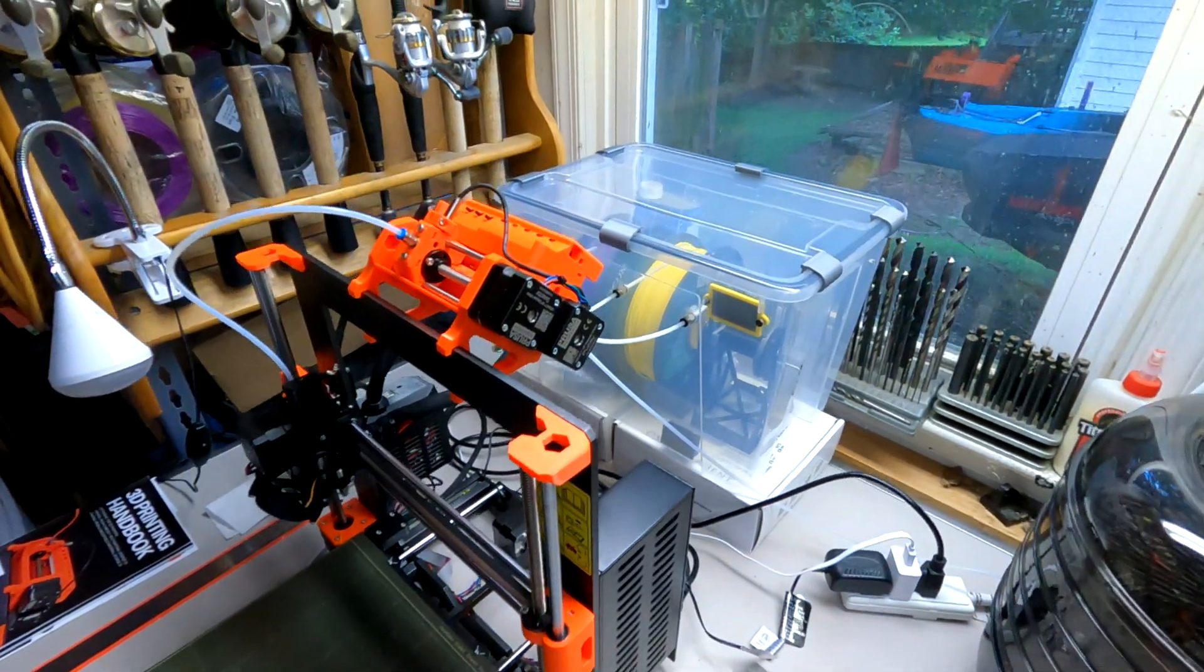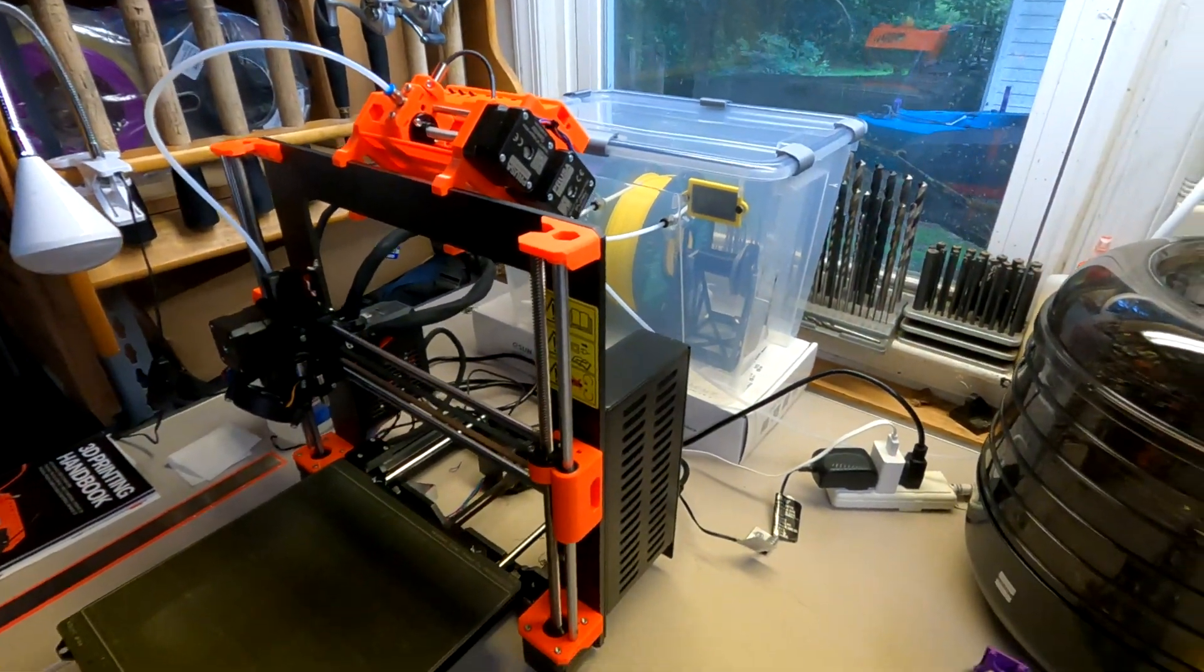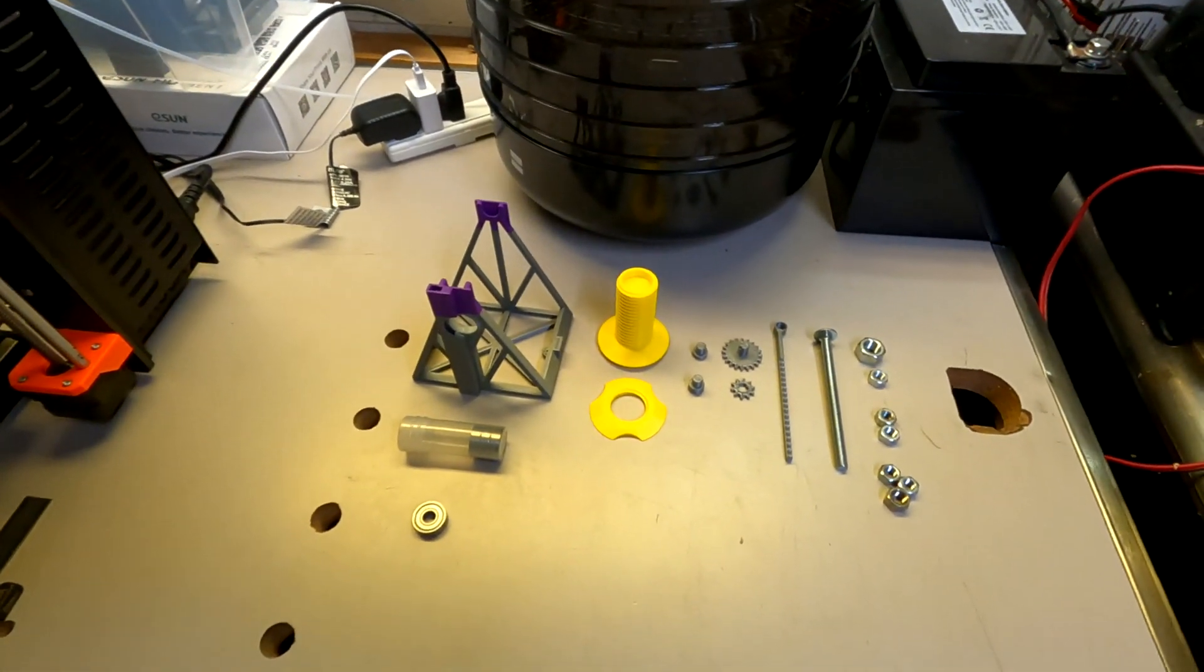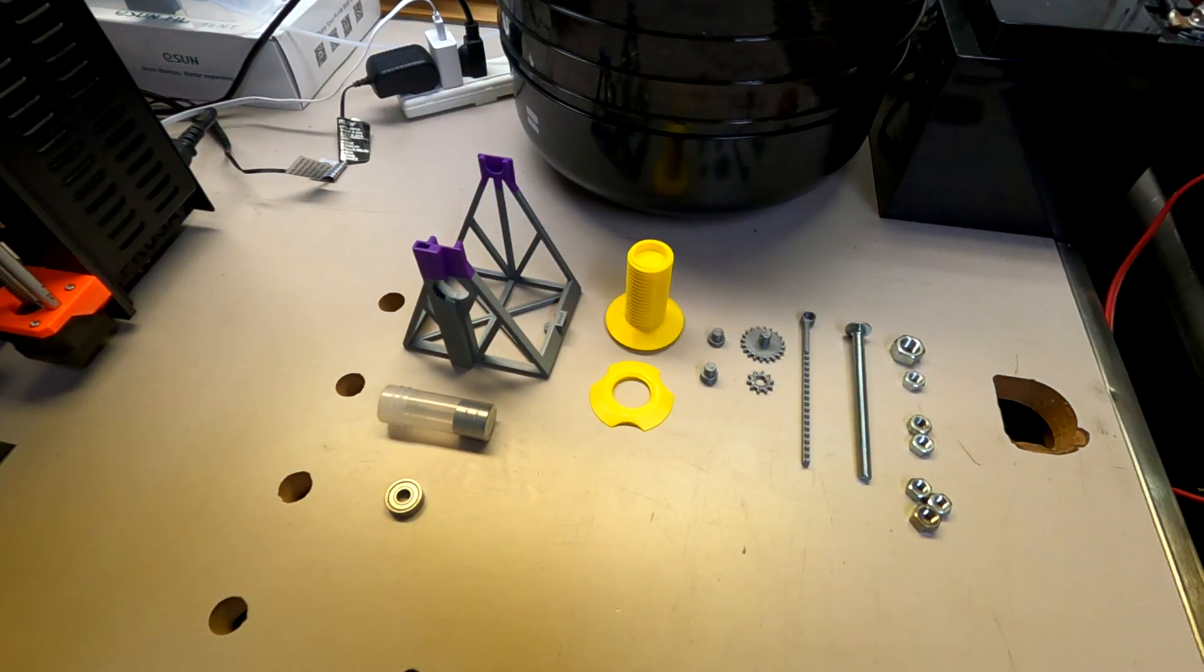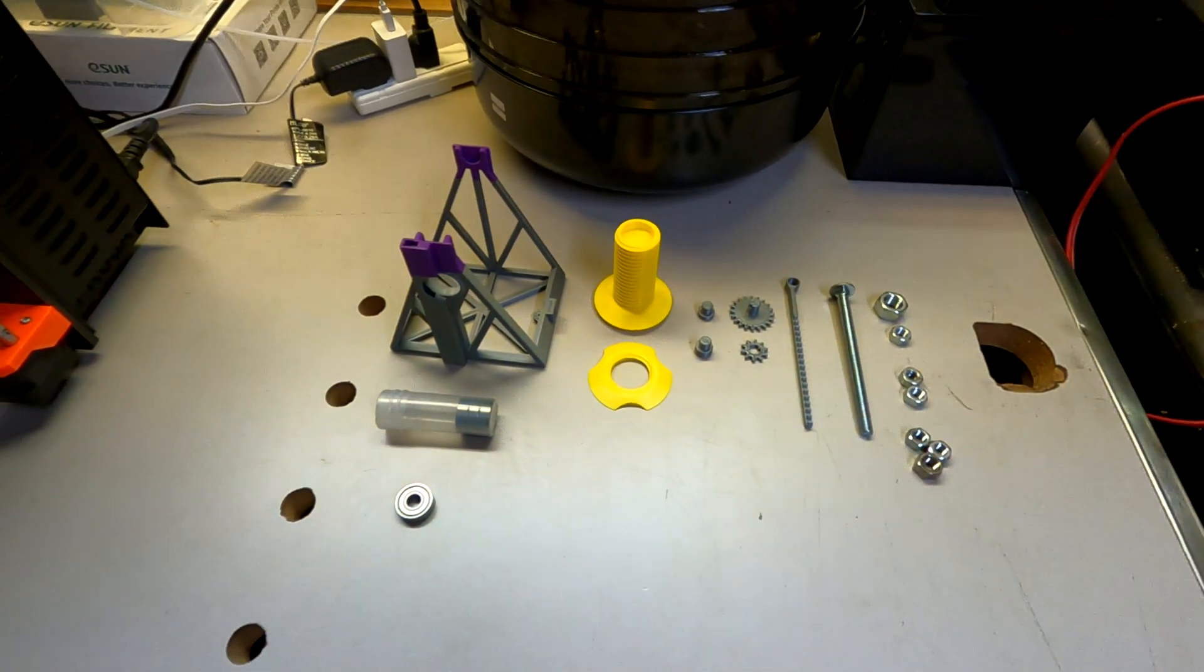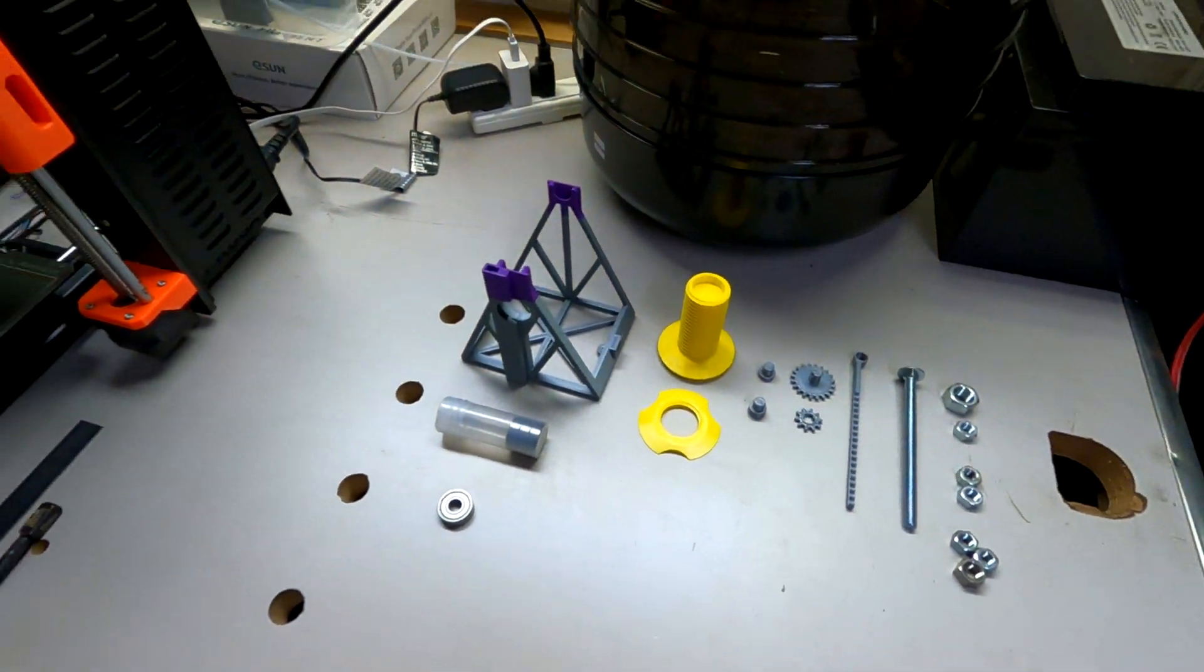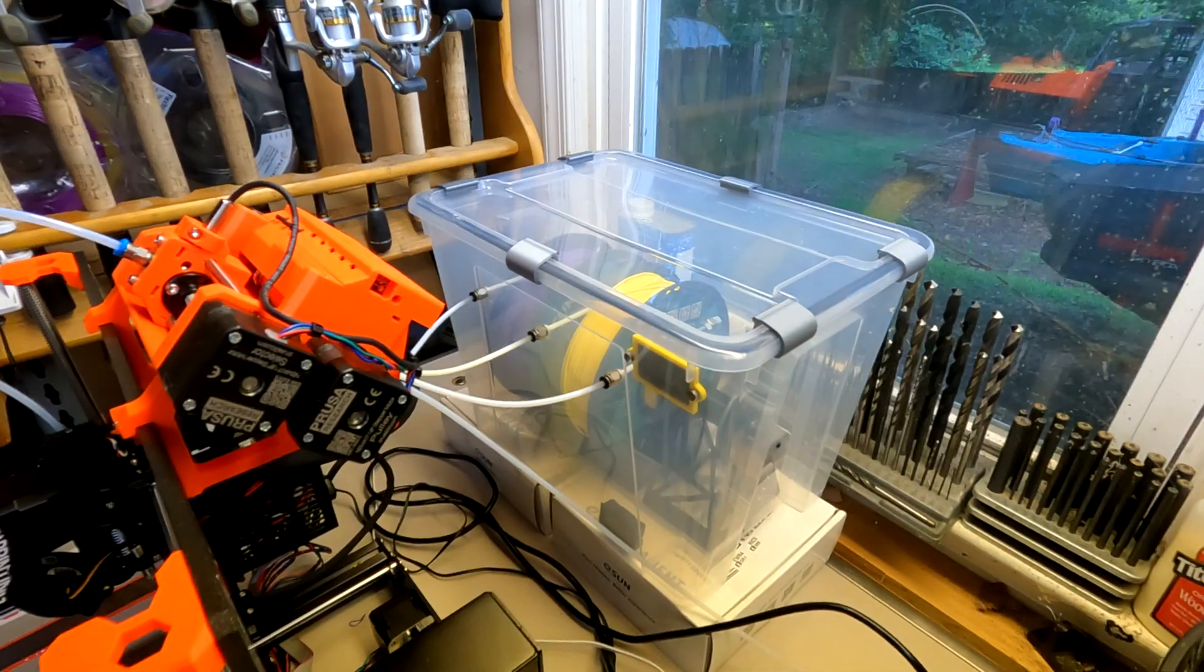The first step in putting a box like this together is printing out the pieces and assembling three retractable spool holders. In this video I'm going to show you how to assemble those spool holders and in the next video I'll show you how to install everything into the Samla box.